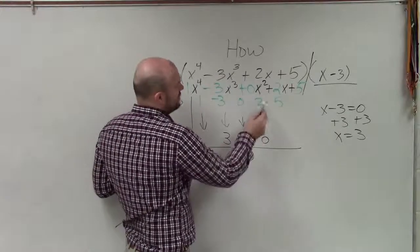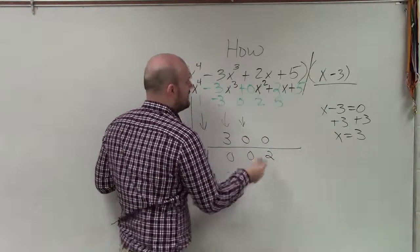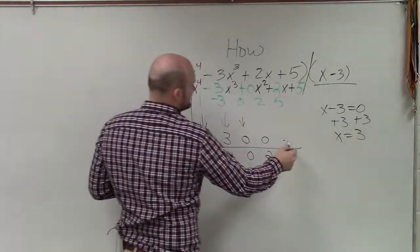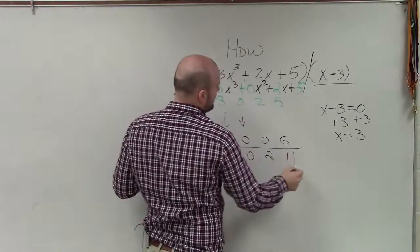That was actually not too bad. 2 plus 0 is 2. And then 2 times 3 is 6. 5 plus 6 is 11.